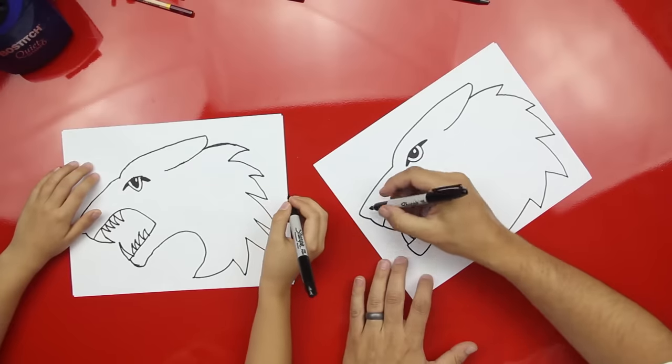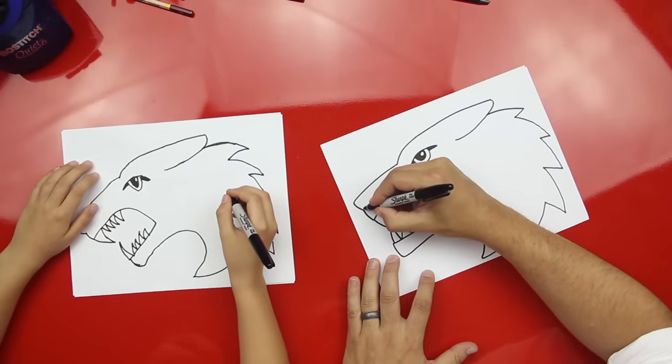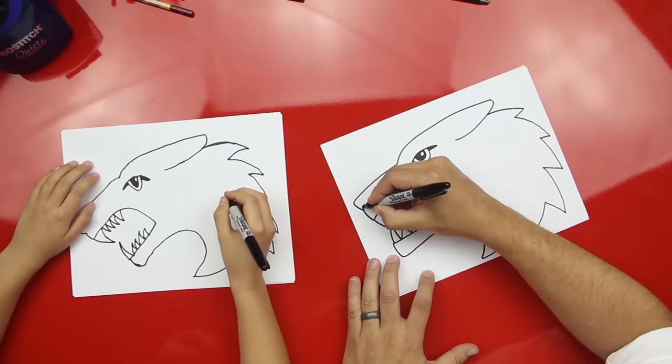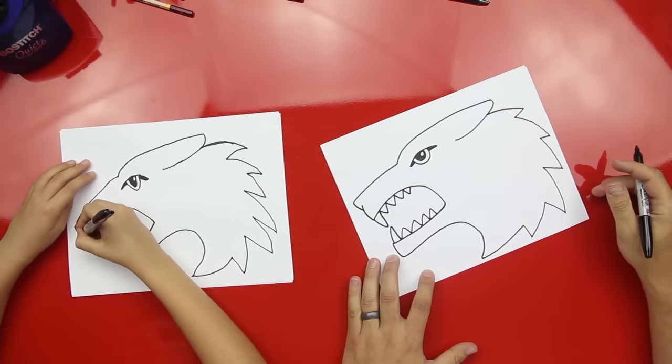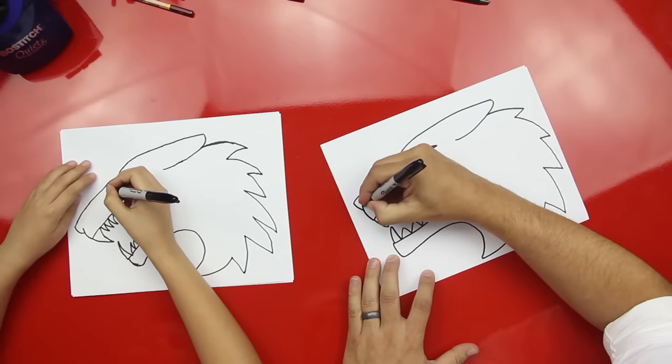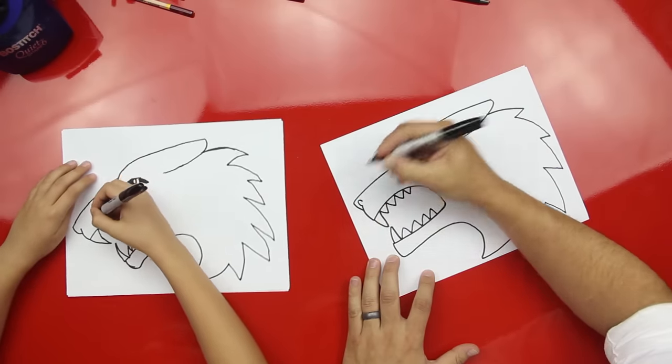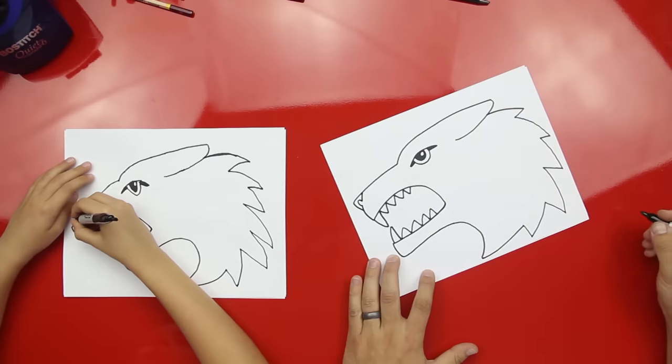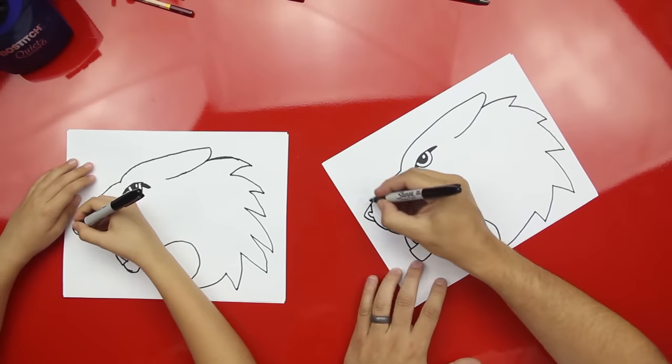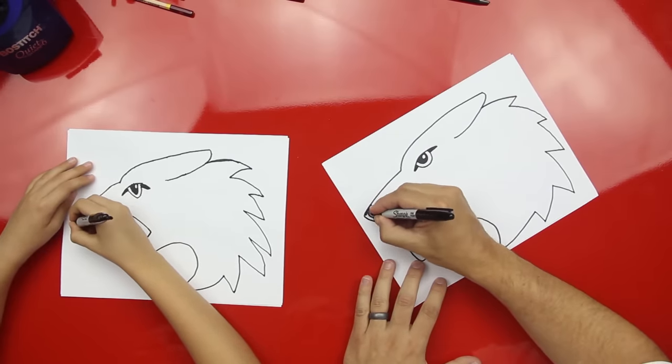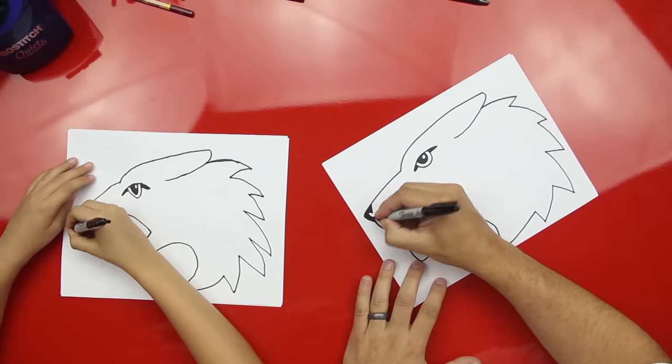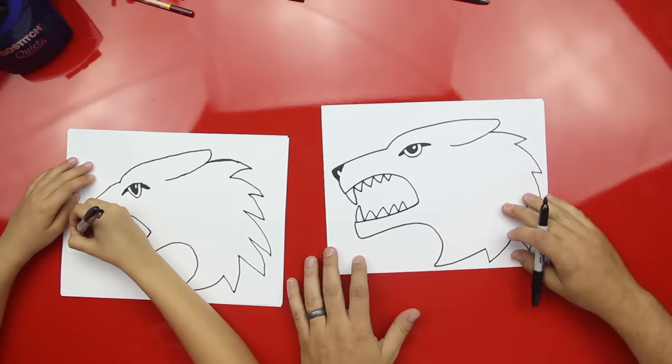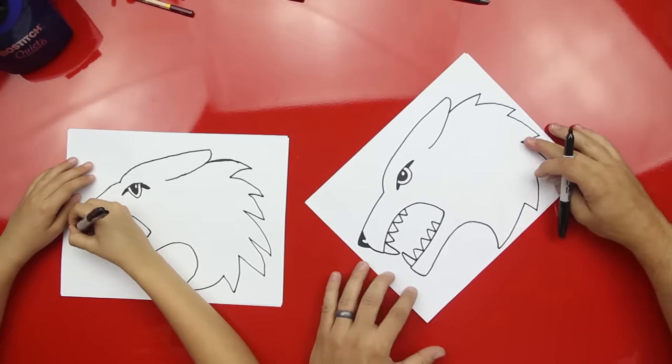Alright, so let's do his nose now. We're going to do a little line that comes up. And then an upside down U. And then a line that finishes his nose. And then color it in. Awesome. We're almost done, dude.